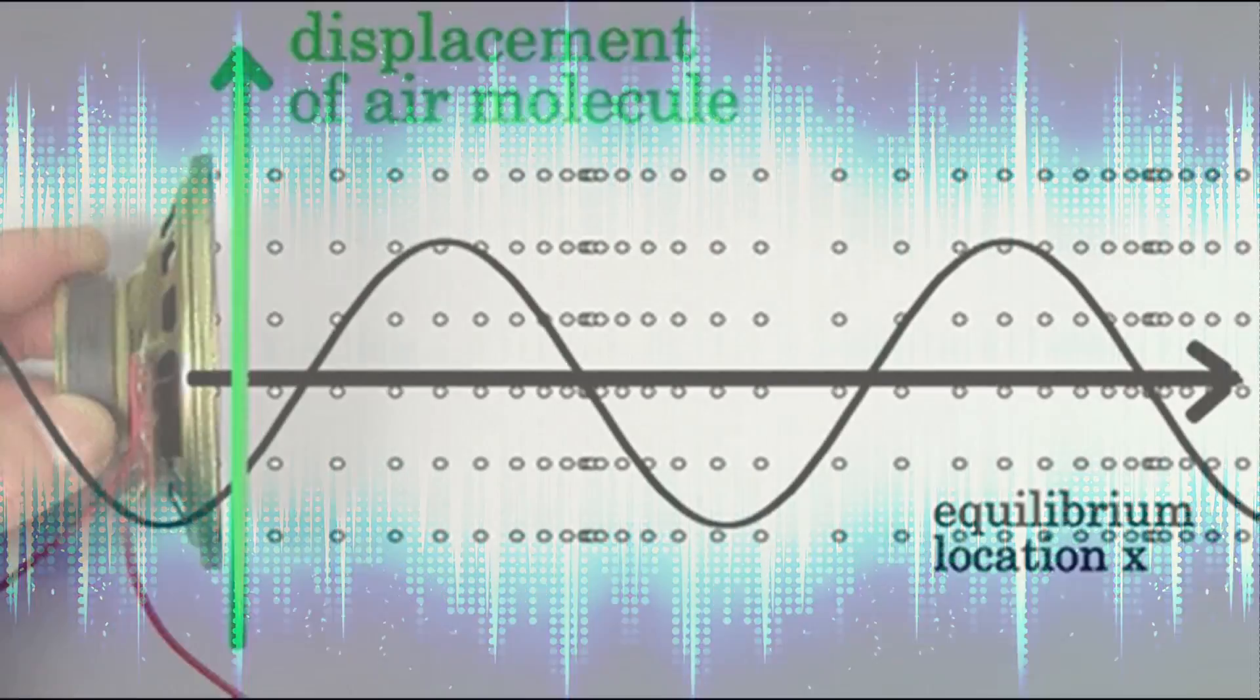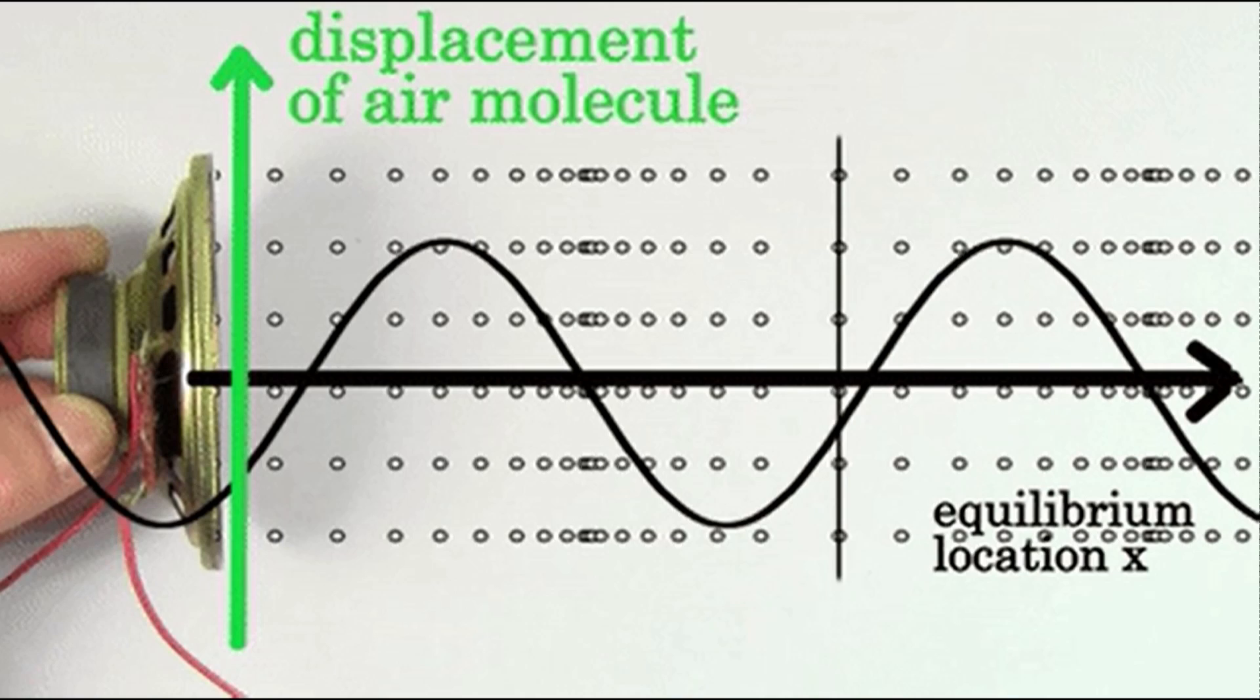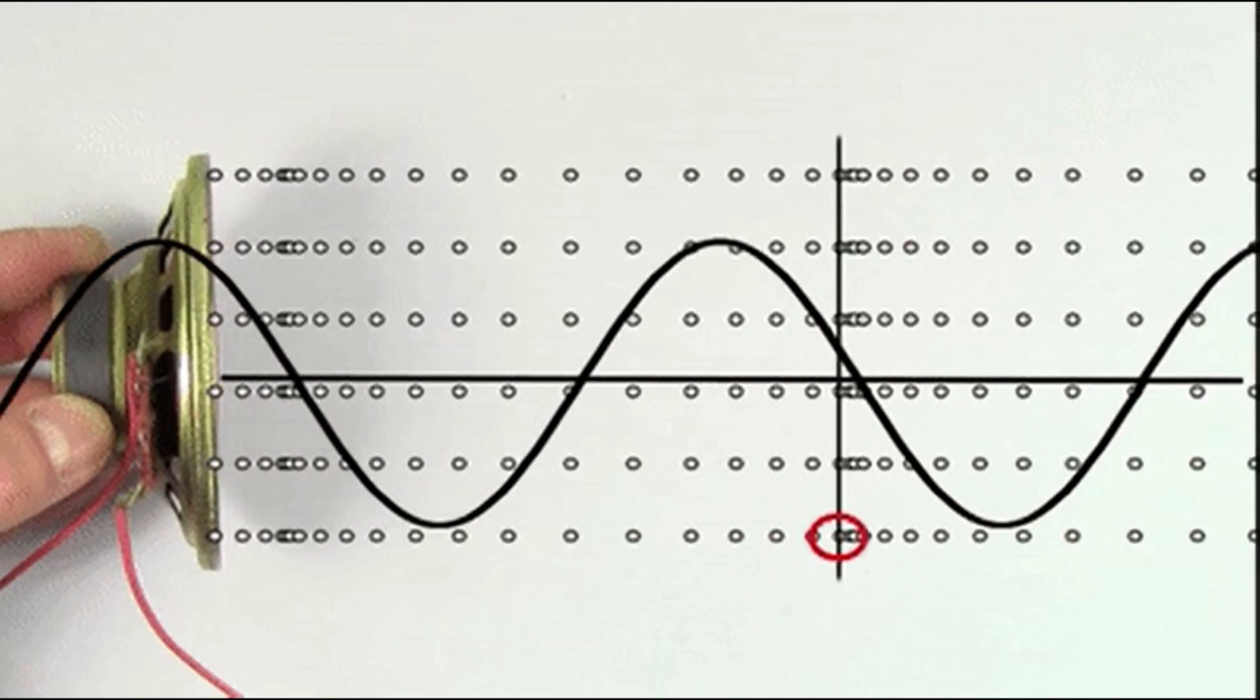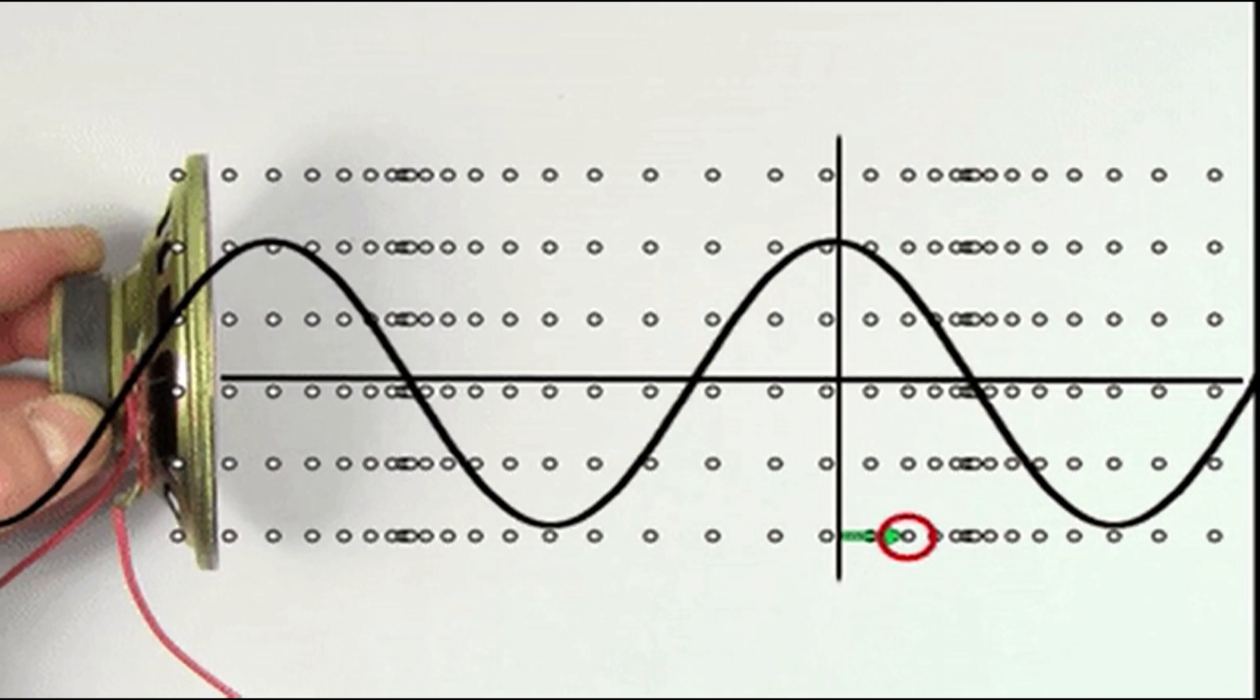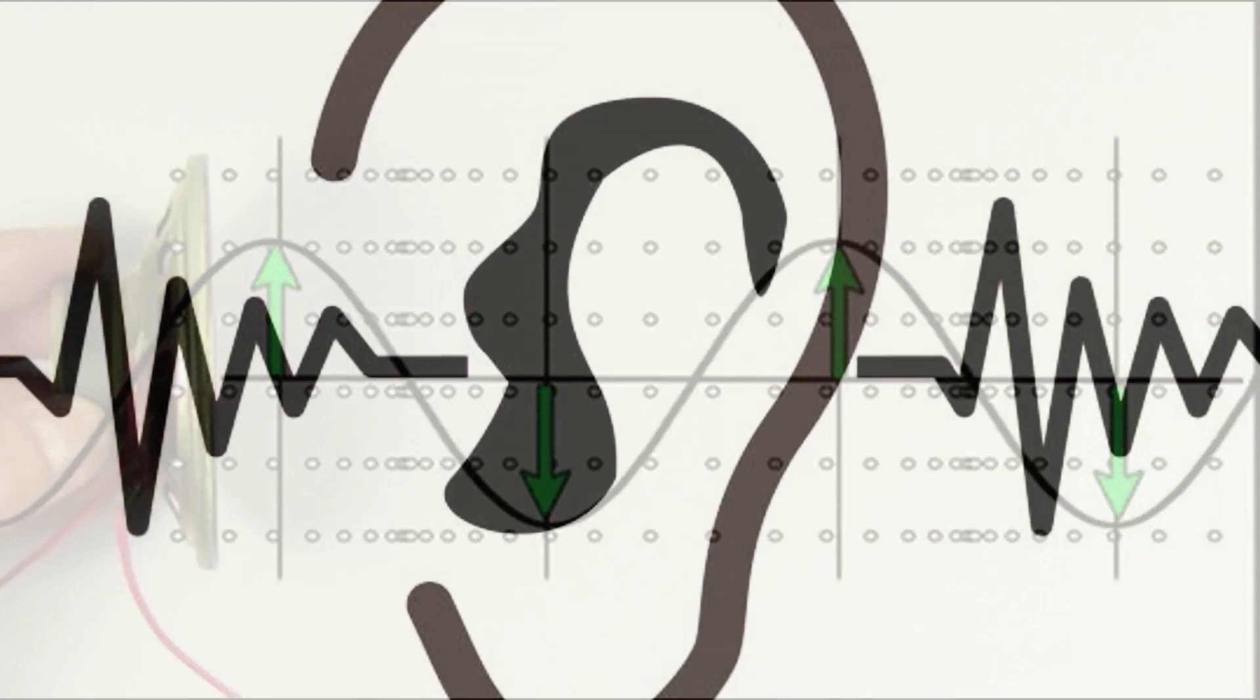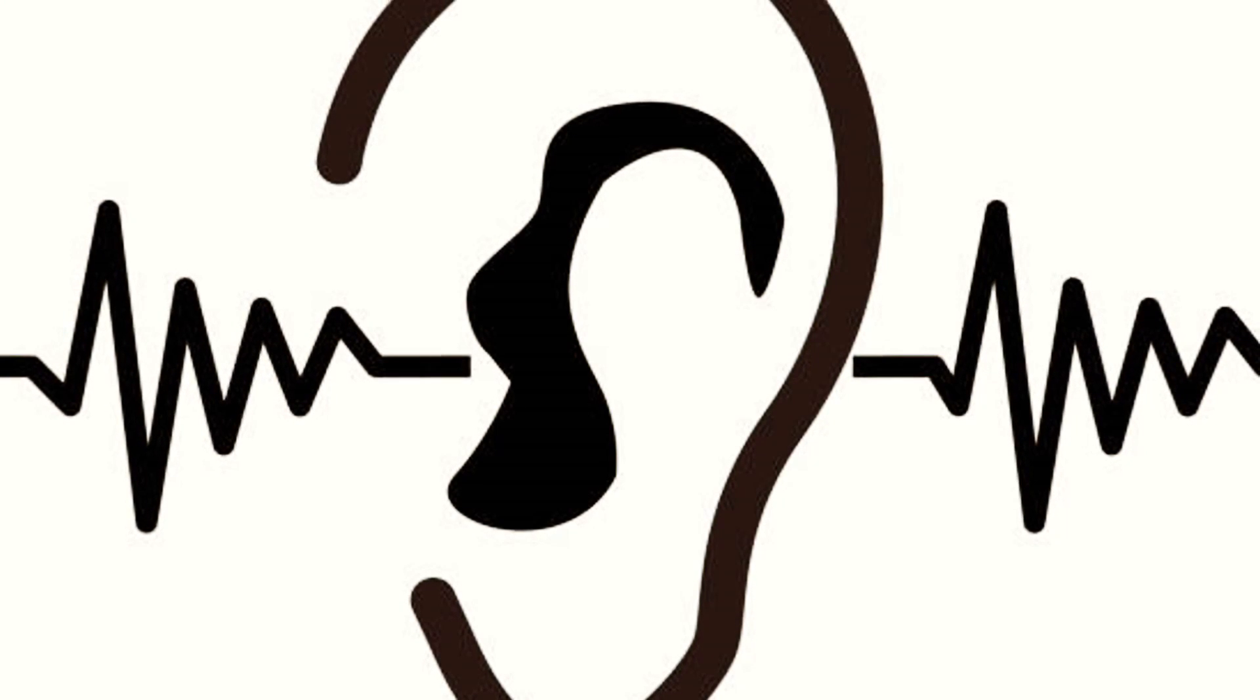These waves are created when an object vibrates or oscillates, causing the molecules in the transmission medium like air to vibrate as well. This vibration creates a pressure wave which travels through the transmission medium, eventually reaching our ears and allowing us to hear the sound.